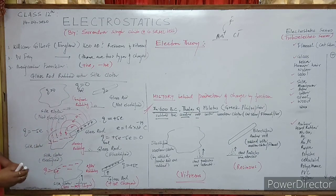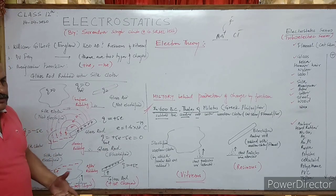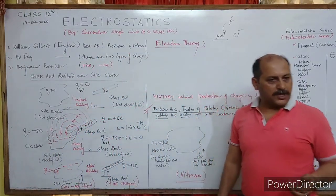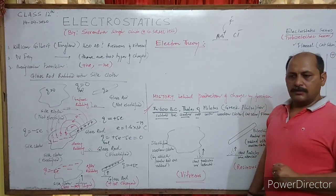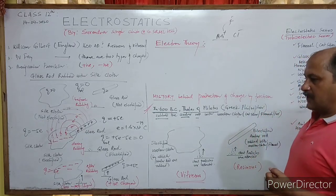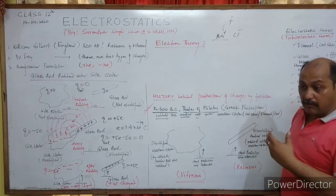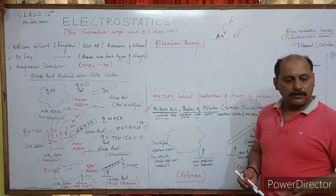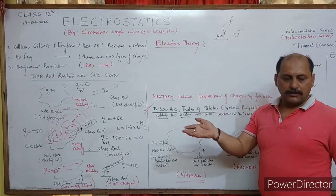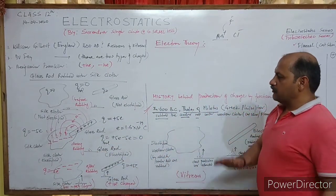Why do electrons get transferred when we rub? Electrons revolve around the nucleus in orbits and are very far from the nucleus. Whereas protons are bound inside the nucleus by very strong nuclear forces and have great binding energy. It is very difficult to eject a proton from the nucleus simply by rubbing. By rubbing you can only remove electrons — that is why electrons get transferred and protons cannot move.